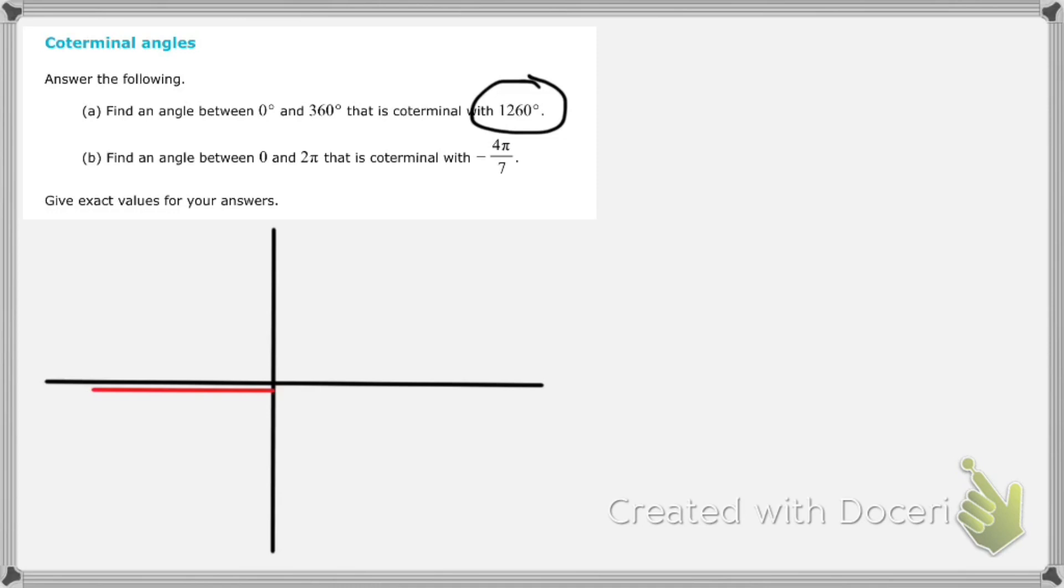How did I get to that position? I went around once, twice, three times, and then I kept going 180 degrees and ended up there. That's a 1260 degree angle.